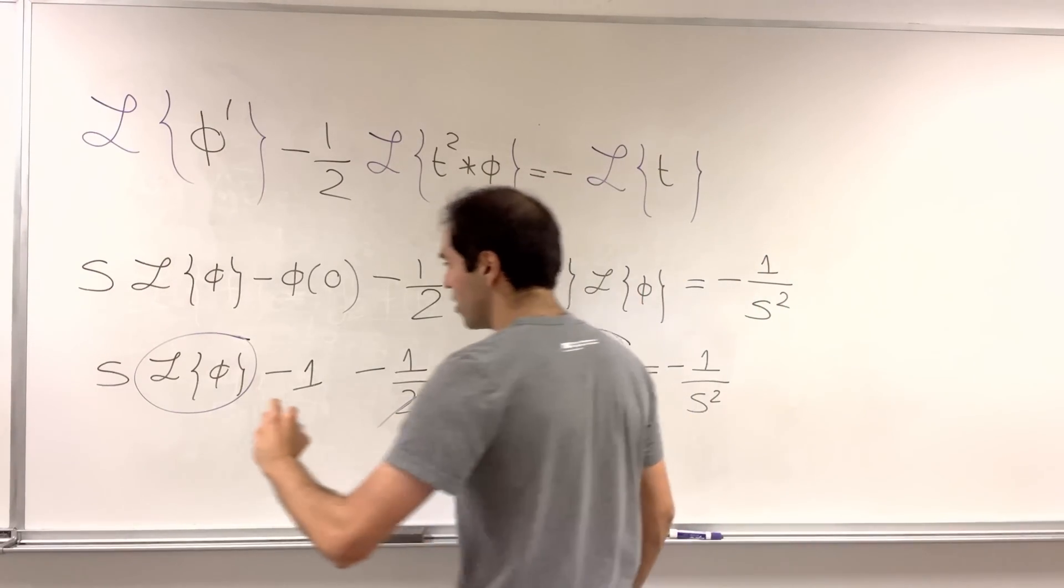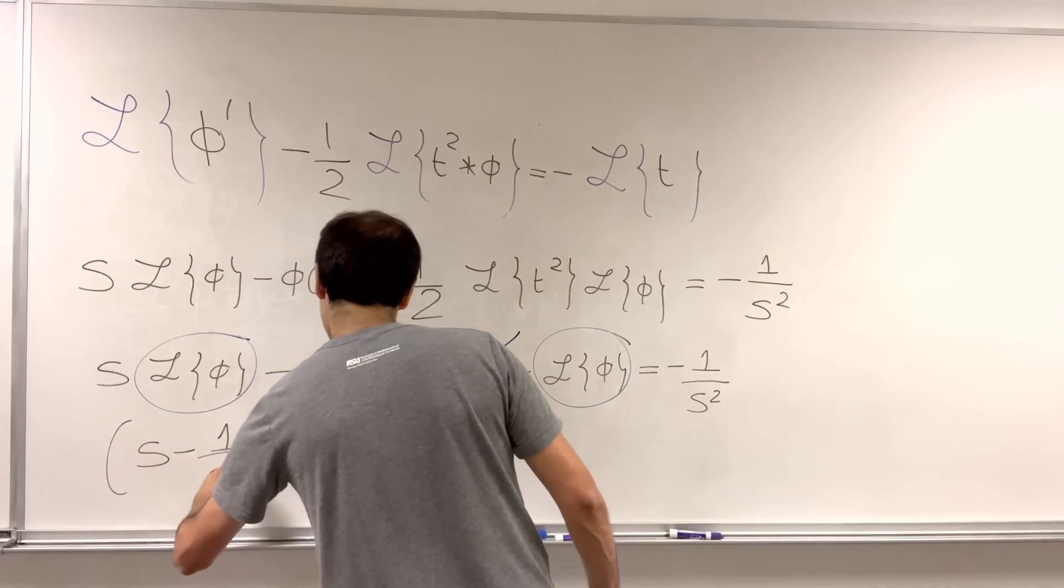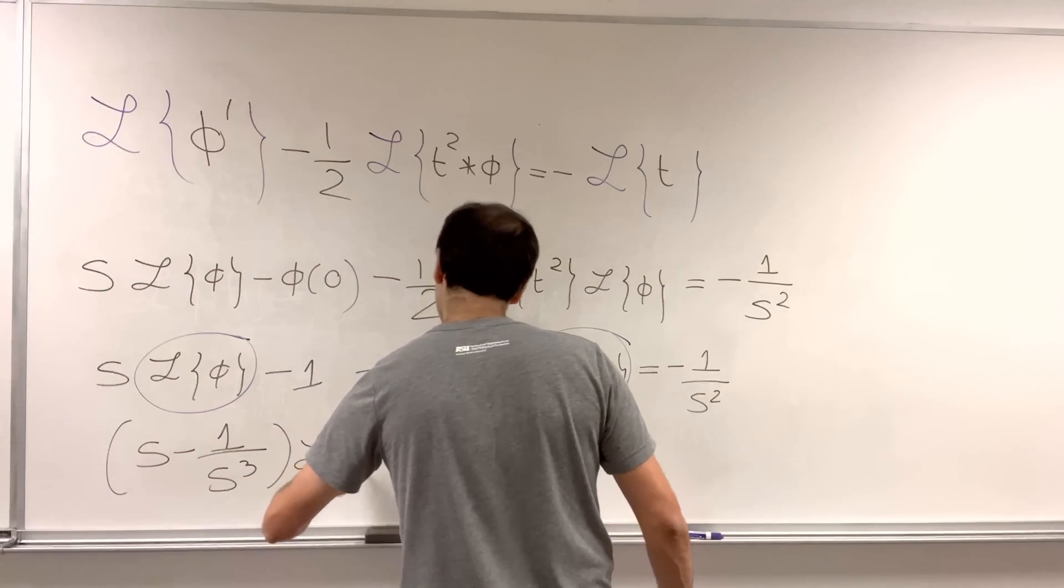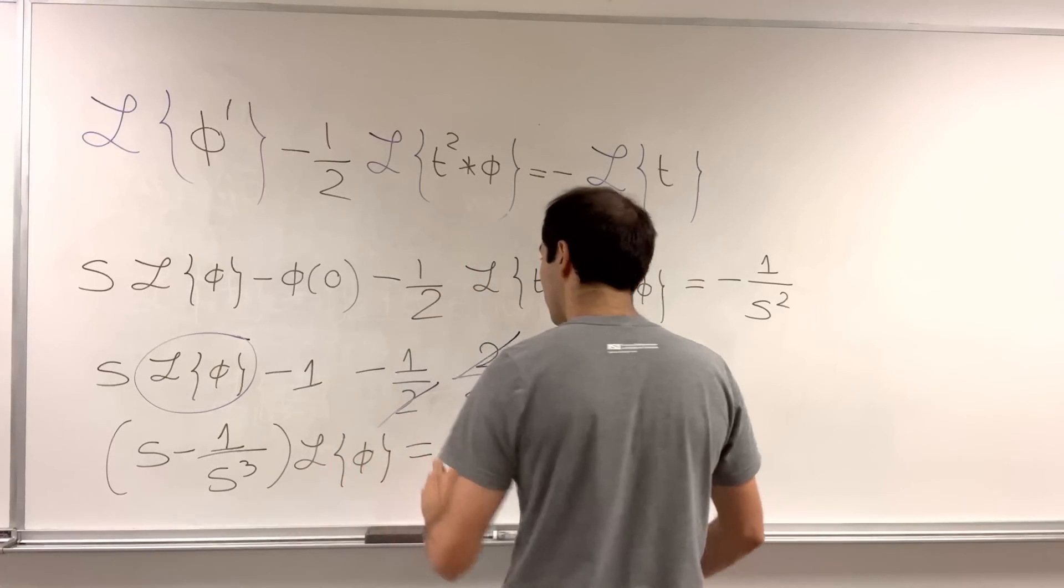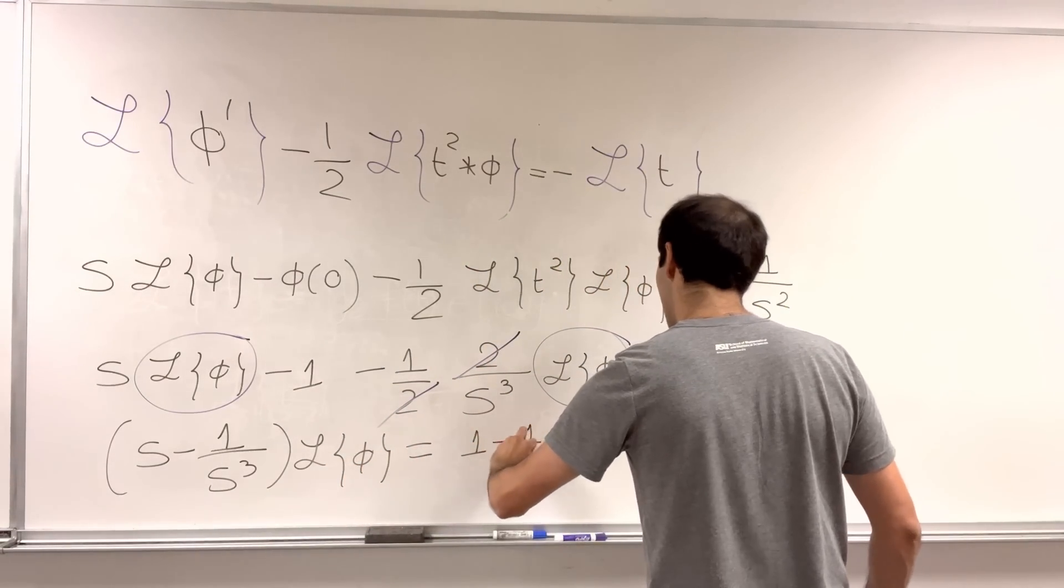So, what this then becomes is s minus one over s cubed, L of phi, equals one minus one over s squared.